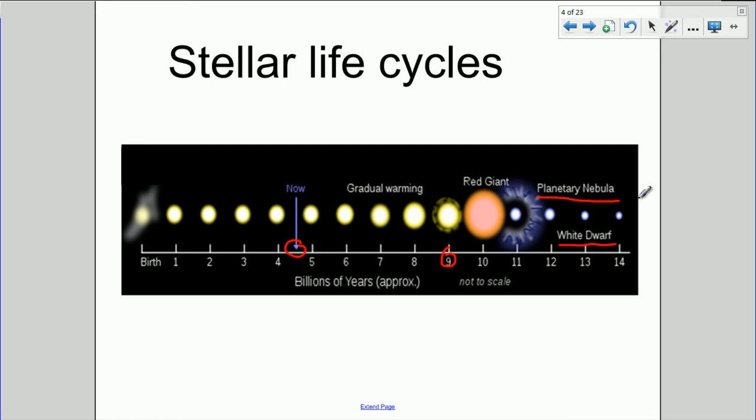The white dwarf will then, it's very hot because it's the core of a star. And over billions upon billions of years, it will fade as it cools. So that's kind of what's going to happen to the stars. It's going to be quite an exciting stage in about five billion years' time, but I don't think we'll be around to see it. Or we won't, anyway.